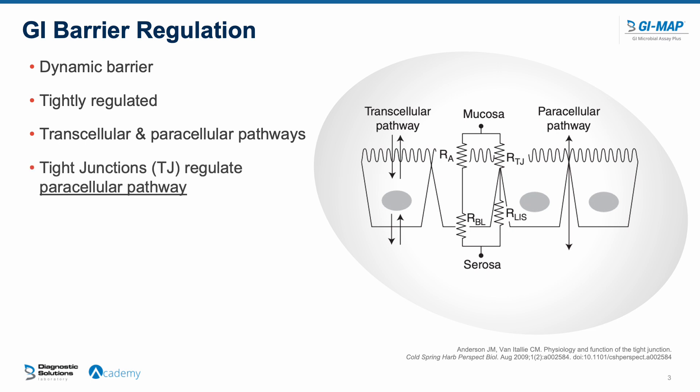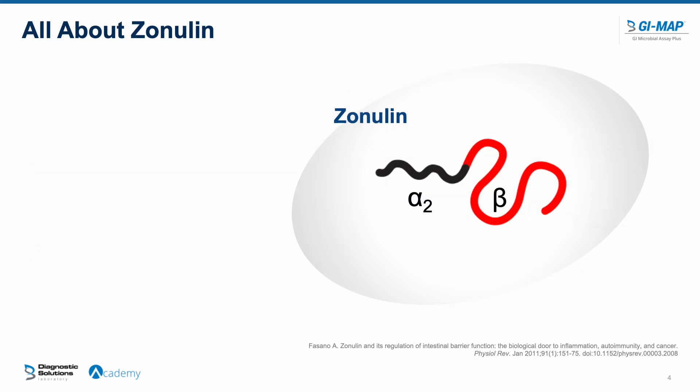Tight junctions are proteins that regulate the paracellular pathway, and zonulin regulates the tight junctions. Zonulin is not the only player in intestinal permeability — TNF (tumor necrosis factor) and IL-13 (interleukin-13) are two more players among many that can regulate those tight junctions.